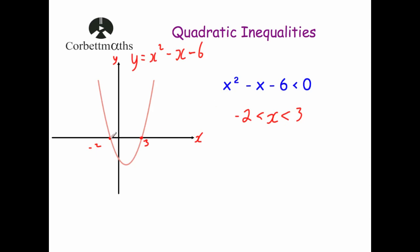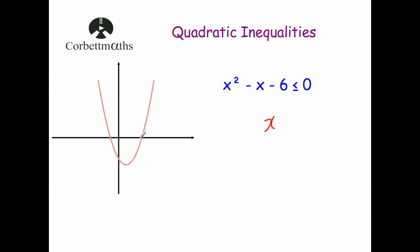So to solve the inequality x squared minus x minus 6 is less than 0, any value between minus 2 and 3 gives a negative. The answer is: x is greater than minus 2 and less than 3. Obviously it can't be minus 2 or 3 themselves because those give 0, and this is strictly less than 0, not less than or equal to. If the inequality were less than or equal to 0, the solution would be x is greater than or equal to minus 2 and less than or equal to 3.